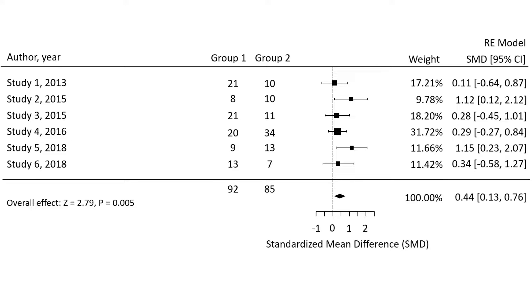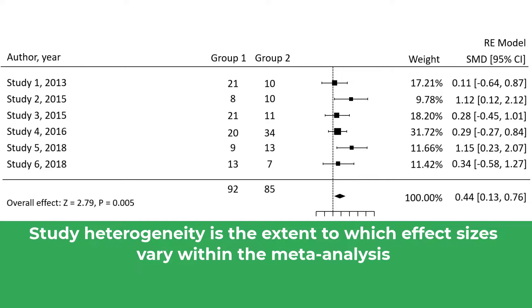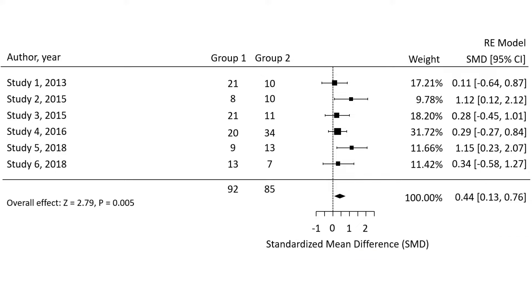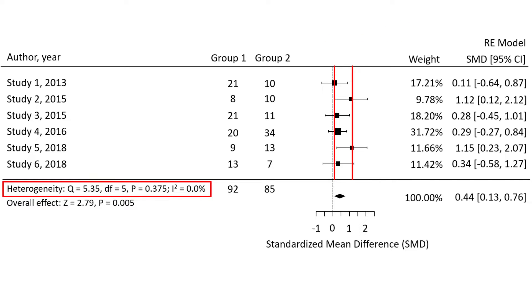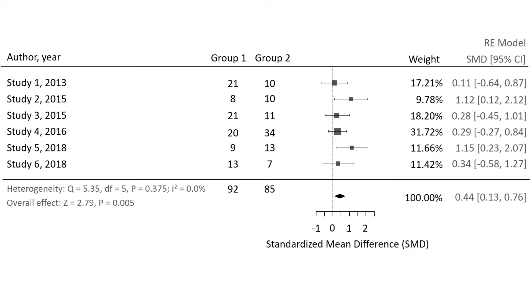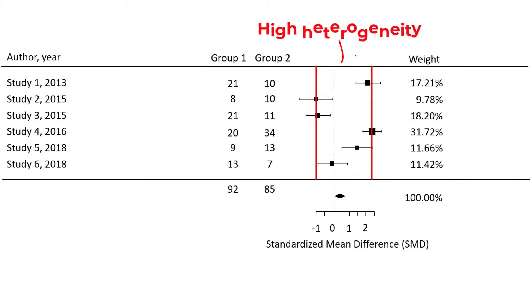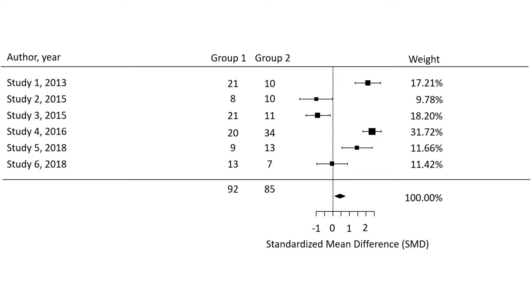Let me briefly talk about study heterogeneity, which is another metric of a meta-analysis. Simply put, study heterogeneity is the extent to which effect sizes vary within a meta-analysis. In this example the effect sizes don't vary much between studies, since they overlap quite a lot — there is little to no study heterogeneity. This is also reflected in the statistical tests for study heterogeneity, since the p-value is greater than 0.05. On the other hand, if the forest plot looked like this, you can see there is a large amount of study heterogeneity since the effect sizes are quite different between the included studies. There is a lot more to learn about study heterogeneity, so I'll save that for another video.